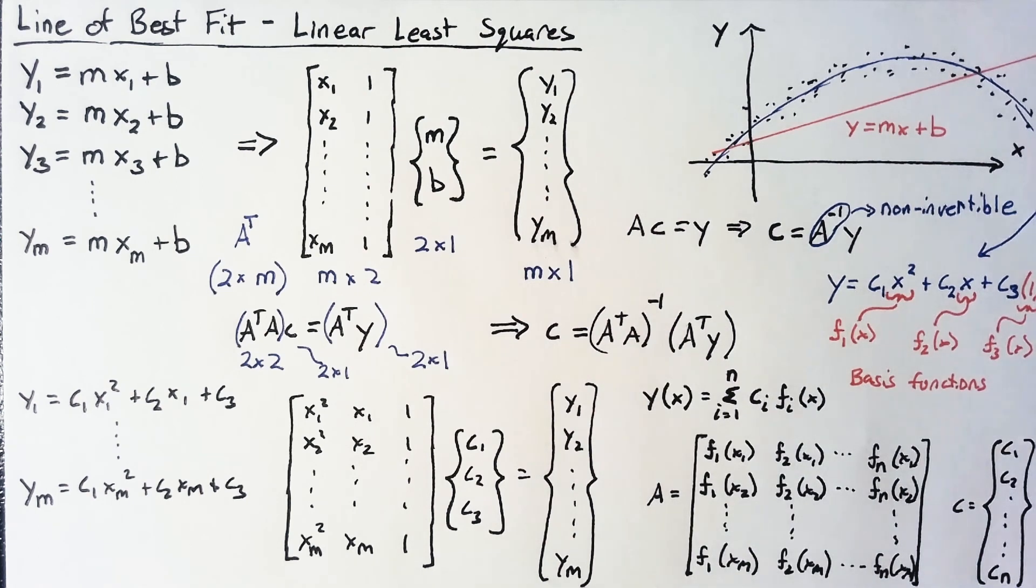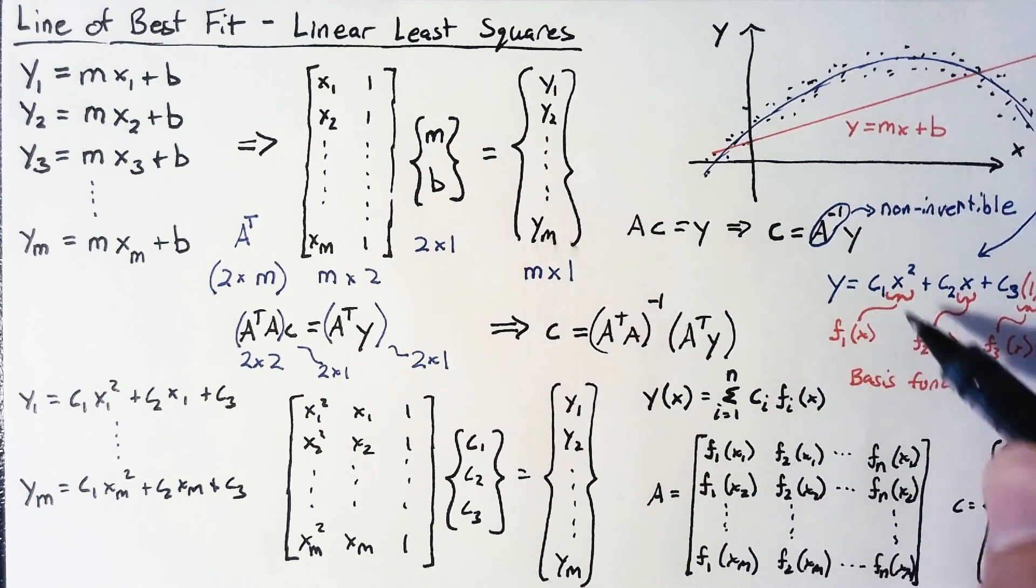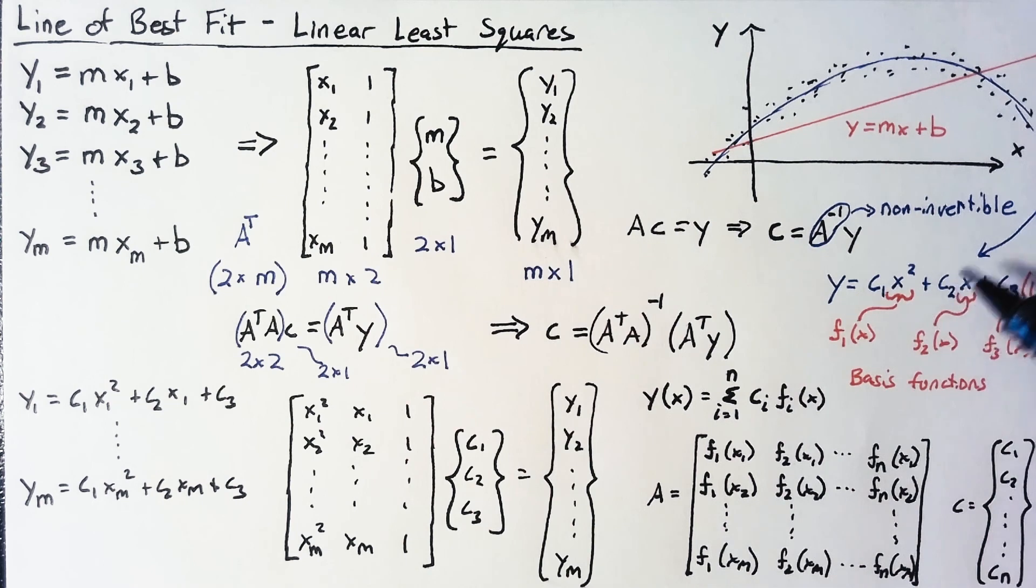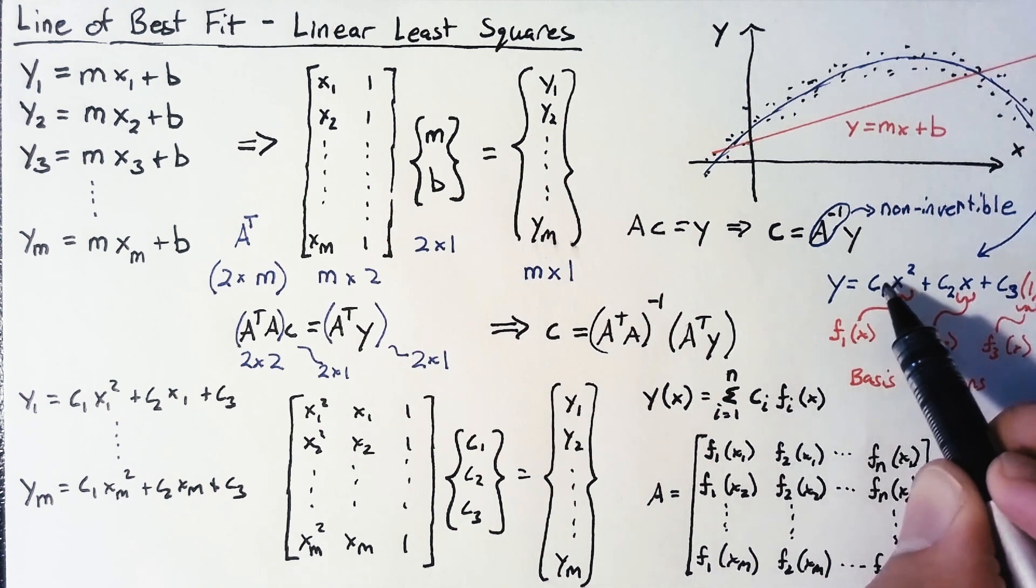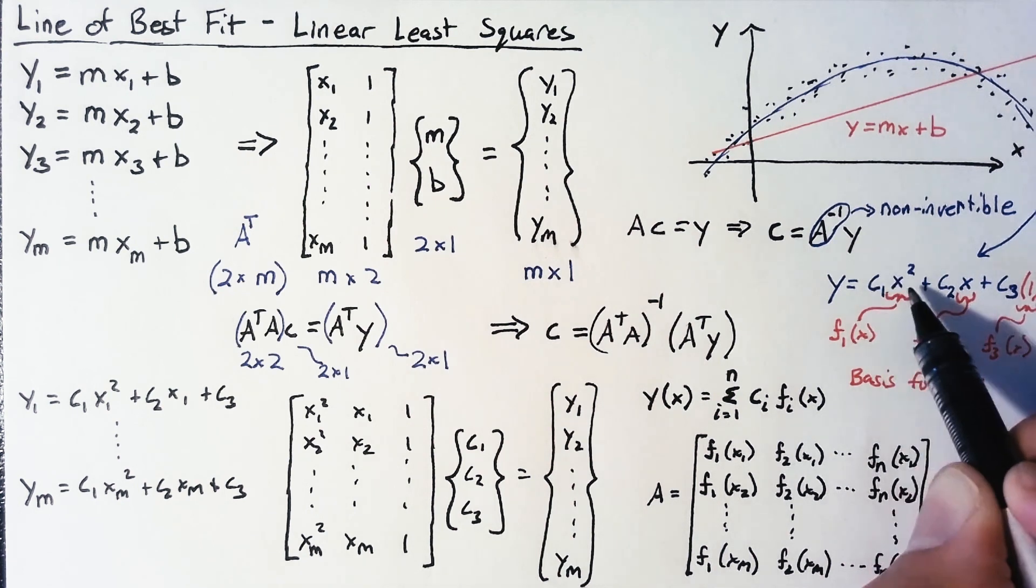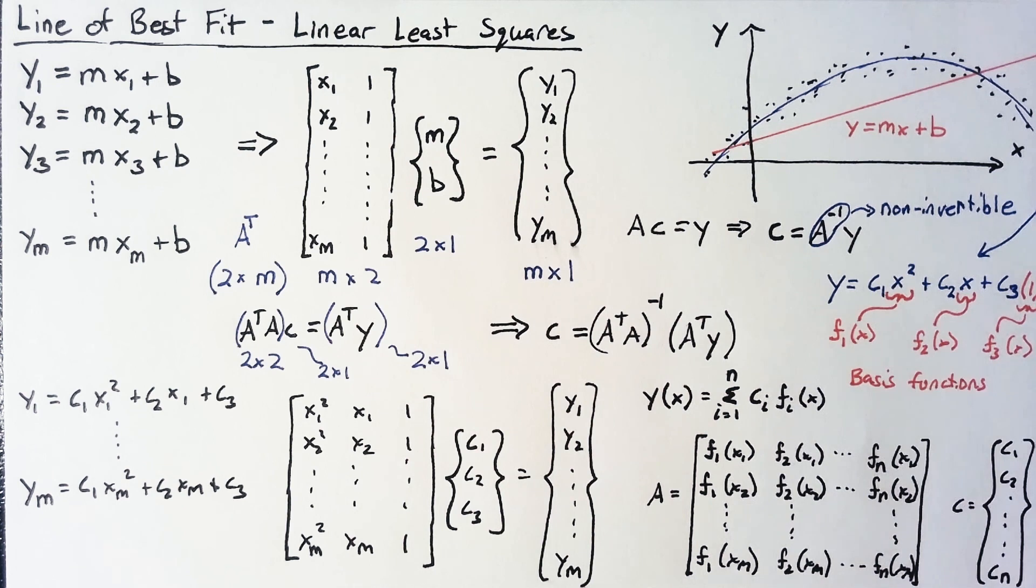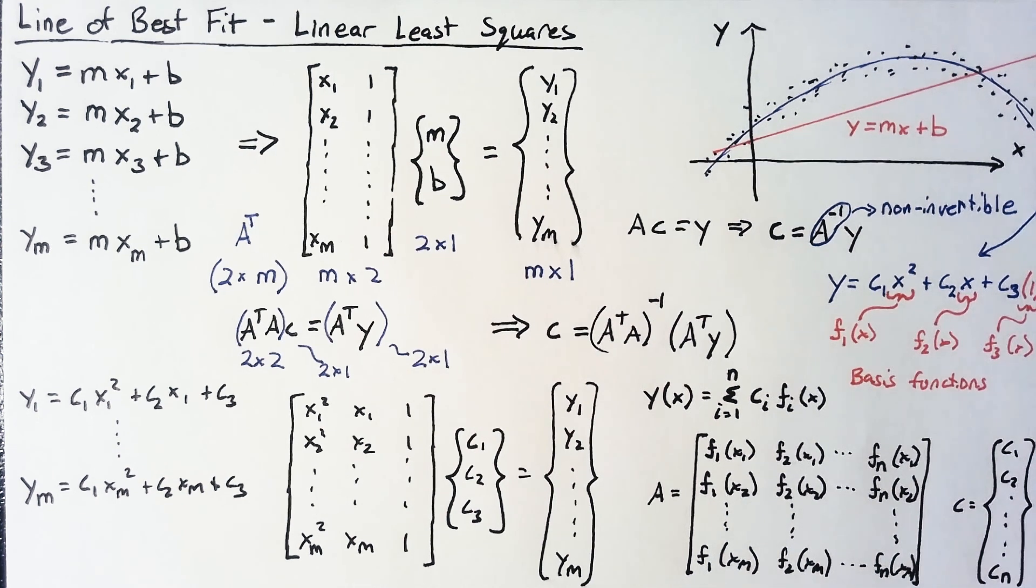Now there is a rule on what these functions should be. The way we have this written, our function has to be purely a function of x. We can't have any c1s inside the function here, so things like e to the c1x are out of the question. We have to have c1e to the x, or c1e to the 2x, or something along those lines. We'll get to some more complicated functions whenever we get to non-linear least squares, but in order to keep this linear, we need to have our parameters pre-multiplying our functions, which are purely a function of x. Good luck, and have fun programming this up.